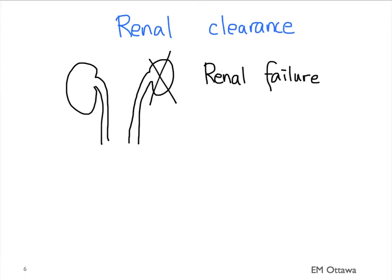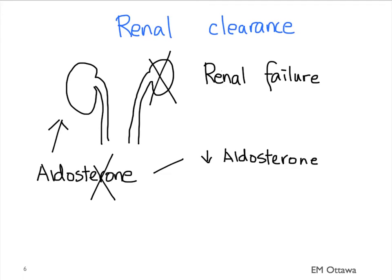The kidney also excretes potassium based on aldosterone. Inhibiting aldosterone production or decreased aldosterone production will decrease the renal clearance for potassium. They can include congenital syndrome or medications such as ACE inhibitor, angiotensin 2 blockers, and spironolactone.